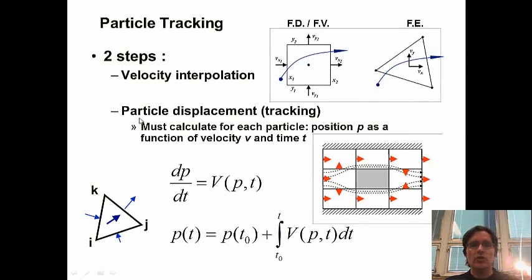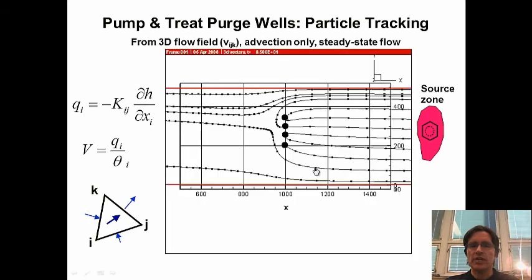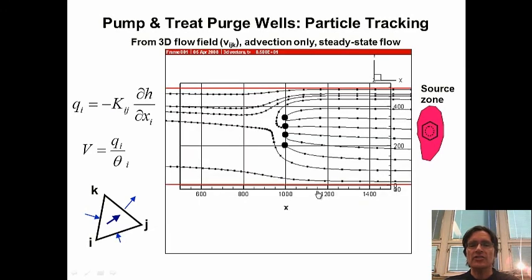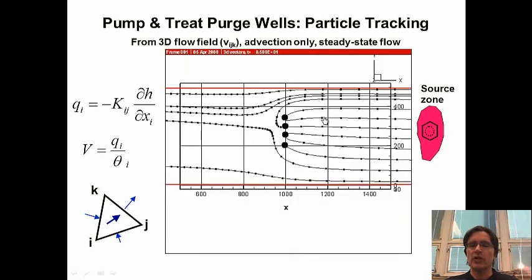The second step is to displace the particle — we move the particle along its flow line along this interpolated velocity field. We must calculate each particle position P as a function of velocity in time T — basically solving this advection or displacement equation over time. Here's an example of particle tracking in the context of purge wells: we have a contaminant source zone, some purge wells, and we can see particles migrating to these four purge wells. This can be either 3D or a 2D plan view. Particle tracking is very useful — it gives us travel times and travel directions — although it only includes advection, not dispersion.